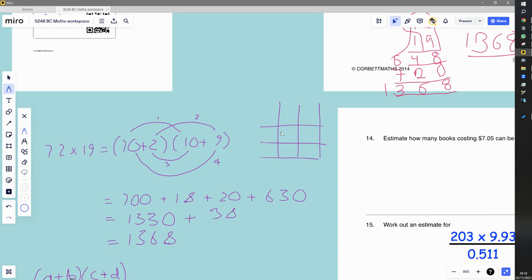And basically, very similar to what you've done there. But so instead of writing 70, I write 70 and 2. Instead of writing 19, I write 10 and 9. And each box will be these numbers here.